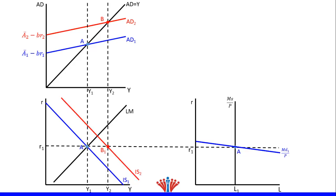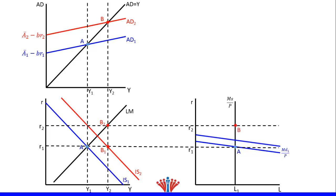Since output increased from Y1 to Y2, this will increase money demand in the money market based on the transaction motive. In order to get R2, we need to find the intersection between Y2 and the LM curve, and we will label this point as B2. Then we will draw a horizontal line crossing B2 to get the new real interest rate in both the IS-LM model and money market. We will label the intersection between the real money supply and R2 in the money market as point B. The money demand curve will shift upward crossing point B to reflect the increase in output from Y1 to Y2.